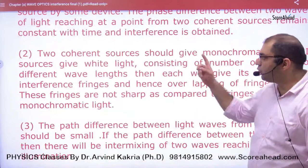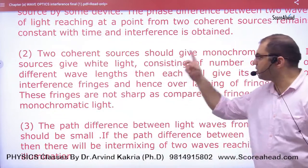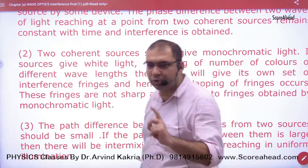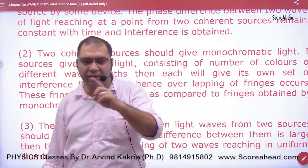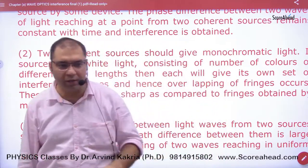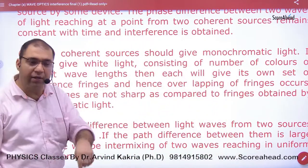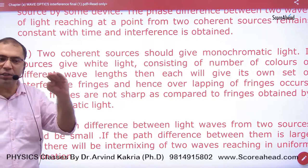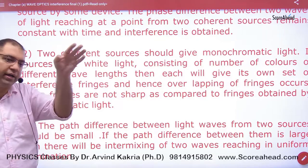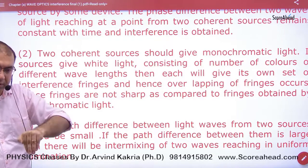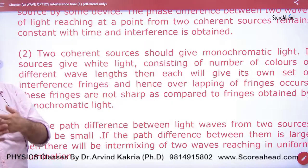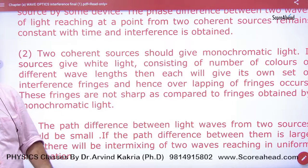The next condition is that two coherent sources should give monochromatic light. Monochromatic means single color light — for example, red, yellow, or blue. White color light is made of 7 colors, and when light comes with 7 colors, interference patterns become problematic.